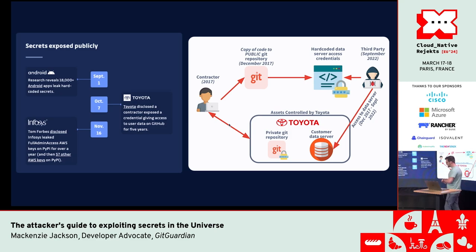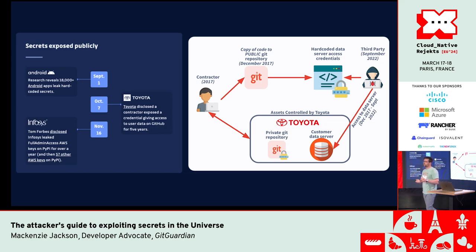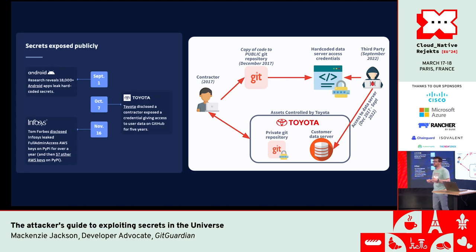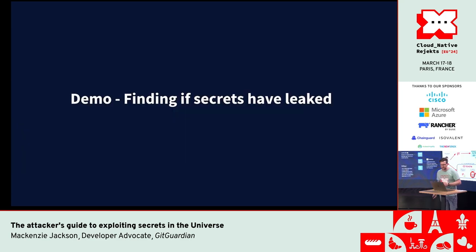Does this ever happen? Yes, scarily a lot. One interesting case was Toyota. Even if you have no direct relationship to GitHub, your organization probably has some exposure to it. In this case, a contractor working for Toyota on a mobile application called T-Connect leaked some keys on their personal GitHub account — far removed from Toyota — but those keys were for databases pertaining to all the users of that application.